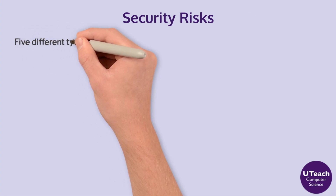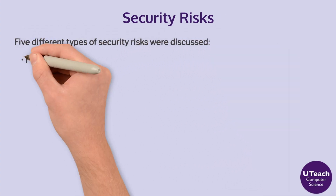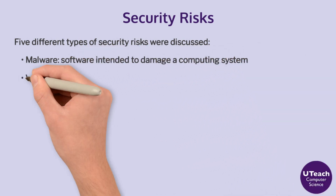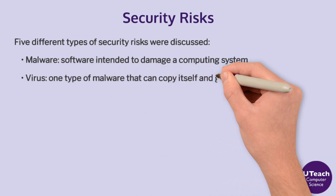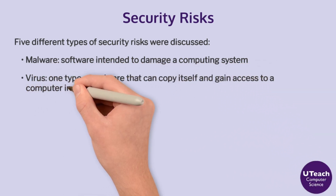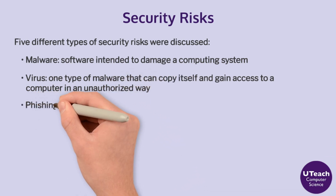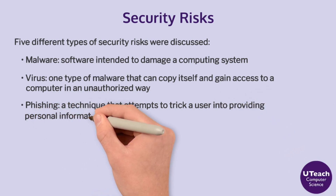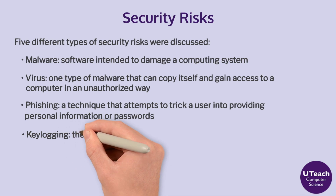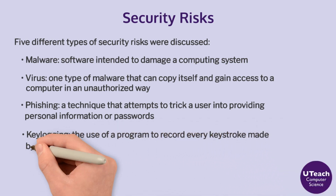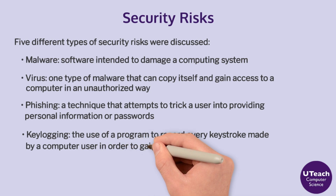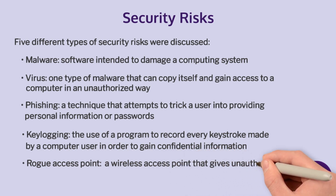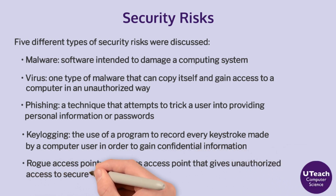Five different types of security risks were discussed. Malware: software intended to damage a computing system. Virus: one type of malware that can copy itself and gain access to a computer in an unauthorized way. Phishing: a technique that attempts to trick a user into providing personal information or passwords. Key logging: the use of a program to record every keystroke made by a computer user in order to gain confidential information. Rogue access point: a wireless access point that gives unauthorized access to secure networks.